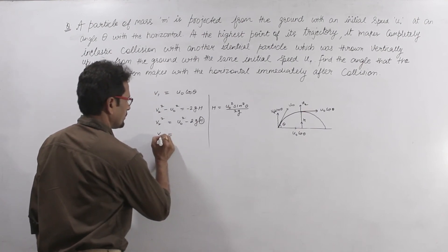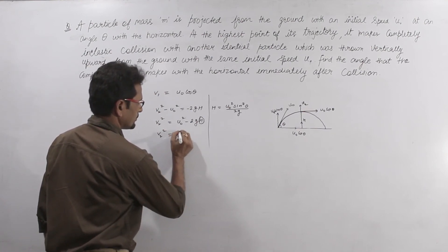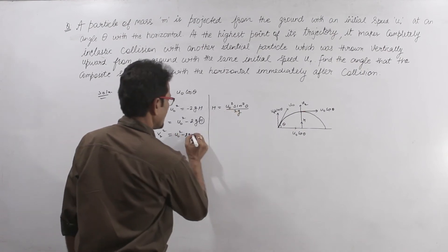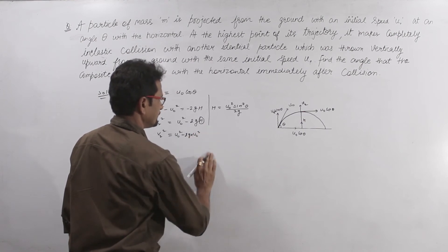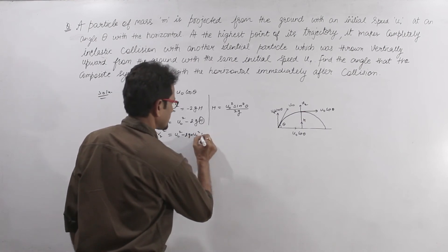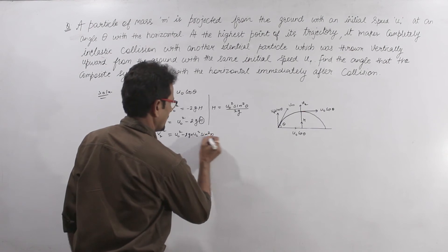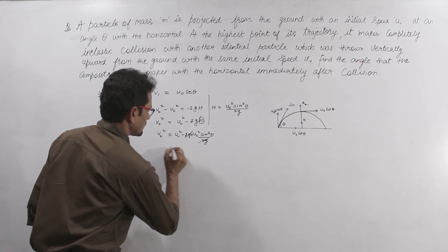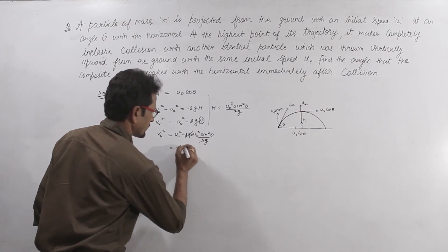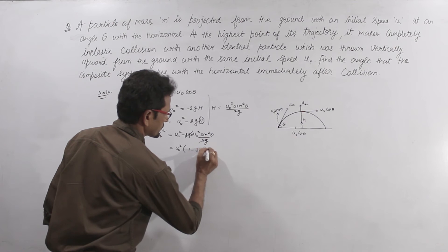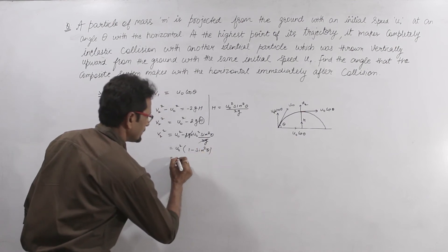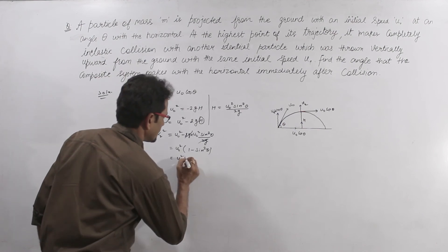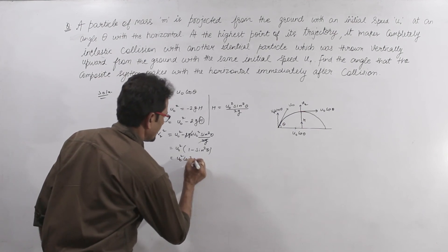So v2 squared equals u0 squared minus 2g times u0 squared sin squared theta upon 2g. 2g cancels, u0 squared is common, giving 1 minus sin squared theta. That is cos squared theta.